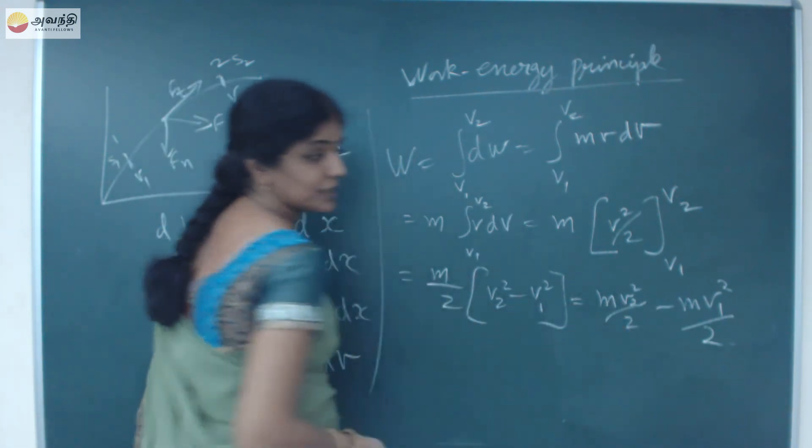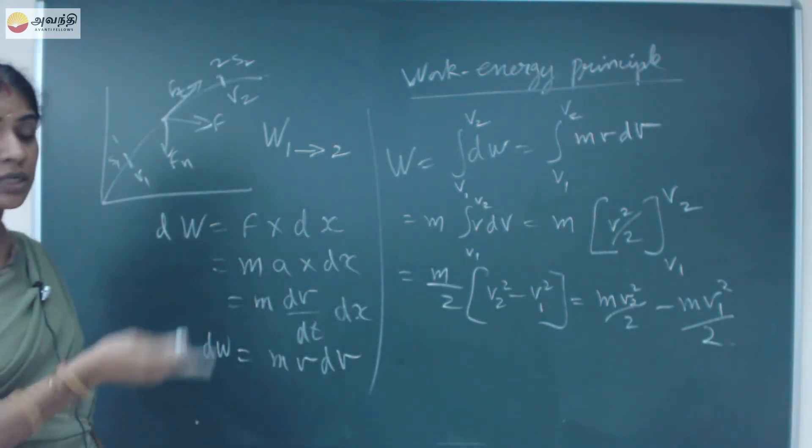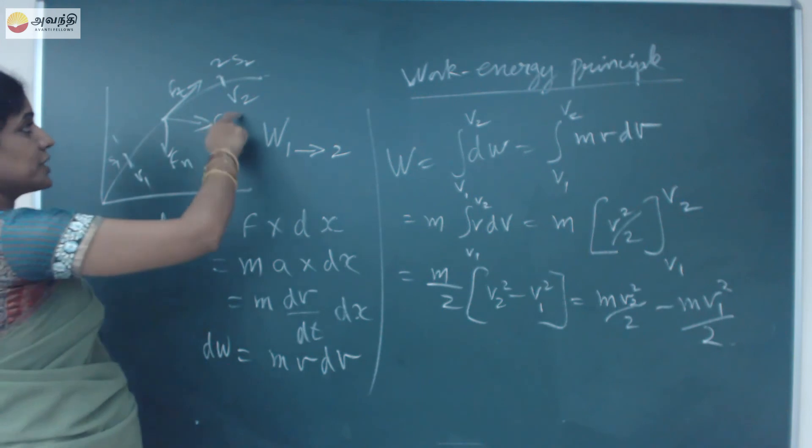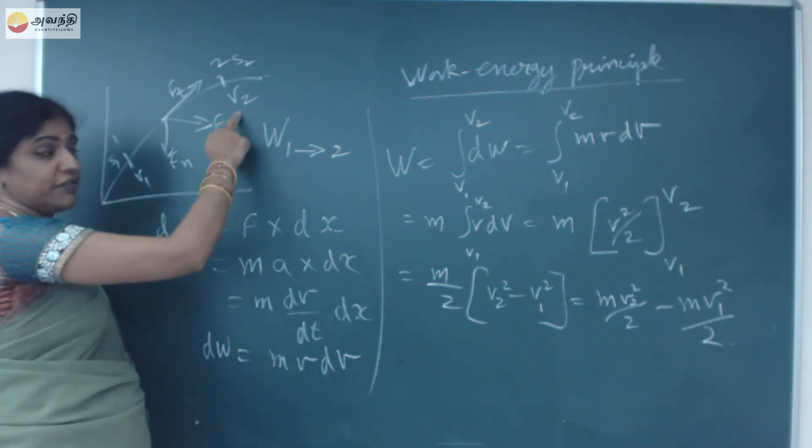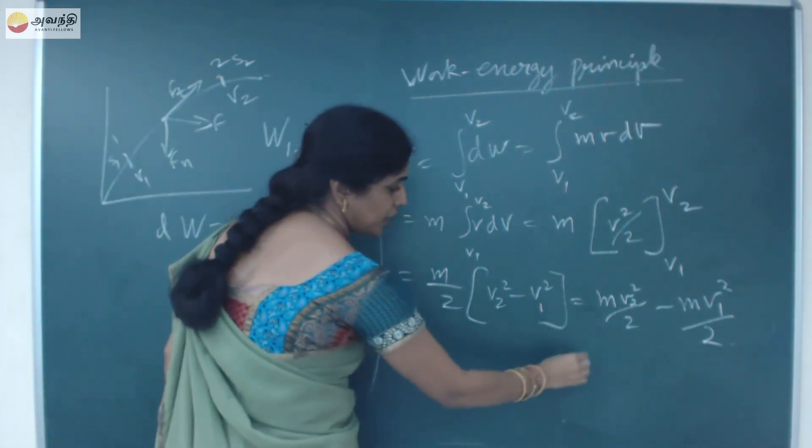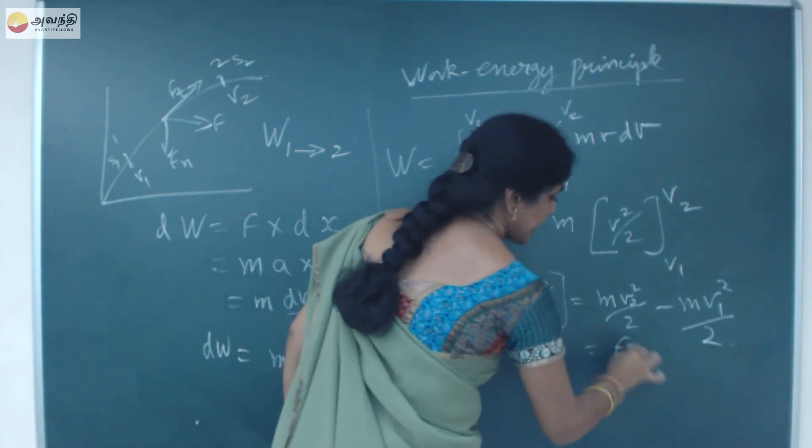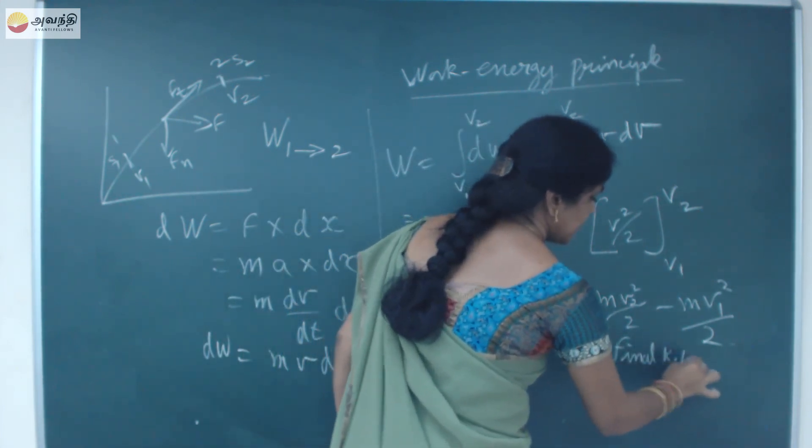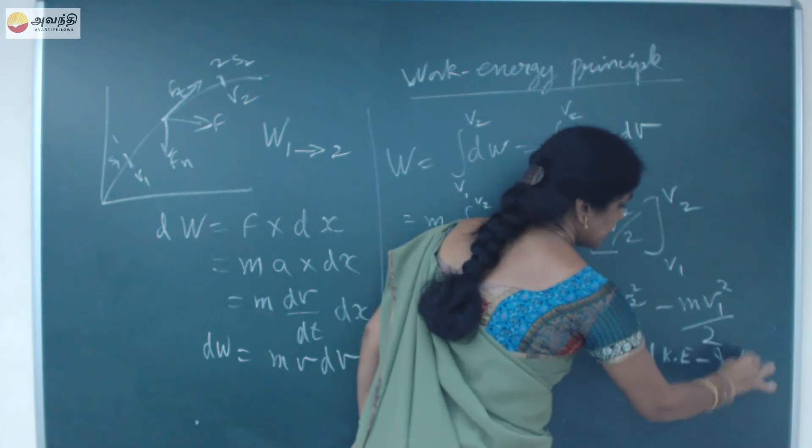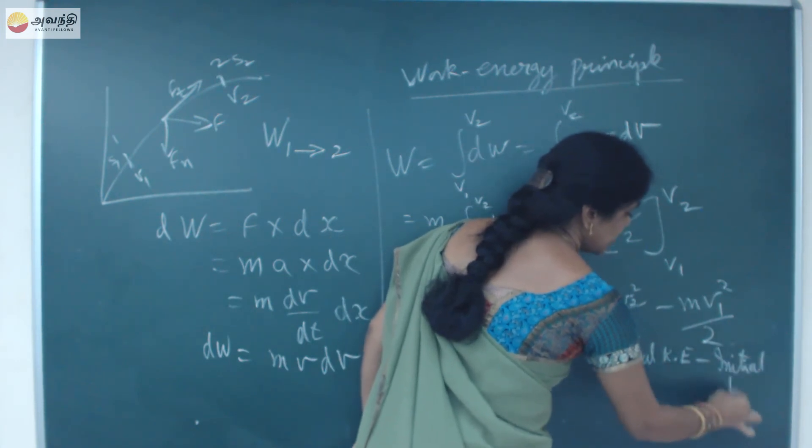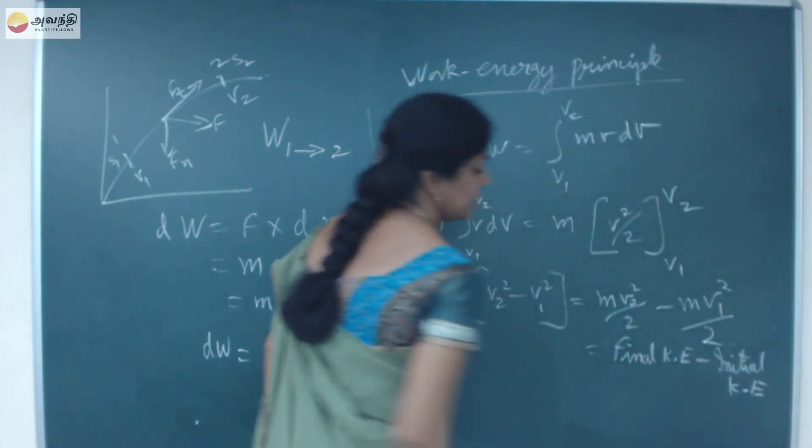What is this? mv2 square by 2 is nothing but the expression for kinetic energy. v2 is the final velocity, so this is nothing but your final kinetic energy minus initial kinetic energy. Final kinetic energy minus initial kinetic energy is nothing but your change in kinetic energy.